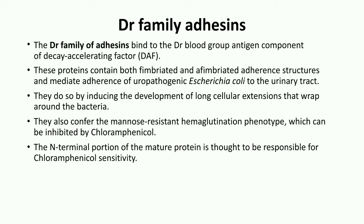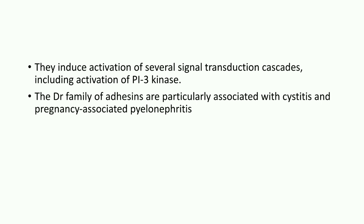The first specific example is the DR family adhesin. The DR family of adhesins binds to the DR blood group antigen component of decay-accelerating factor. These proteins contain both fimbriated and afimbriated adherence structures and mediate the adherence of uropathogenic E. coli to the urinary tract. They do so by inducing the development of a long cellular extension that wraps itself around the bacteria. They also confer a mannose-resistant hemagglutination phenotype which can be inhibited by chloramphenicol. The N-terminal portion of the mature protein is thought to be responsible for chloramphenicol sensitivity. They induce activation of several signal transduction cascades including the PI3 kinase pathway. The DR family adhesins are particularly associated with cystitis and pregnancy-associated pyelonephritis.